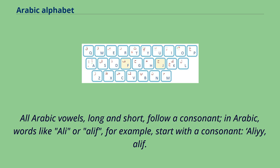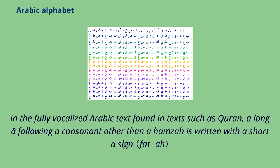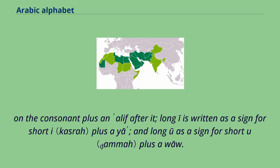In Arabic, words like 'alif' start with a consonant. In fully vocalized Arabic texts found in the Quran, a long 'a' following a consonant other than a hamza is written with a short 'a' sign on the consonant plus an alif after it. Long 'i' is written as a sign for short 'i' plus a ya, and long 'u' is a sign for short 'u' plus a waw.